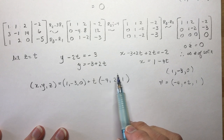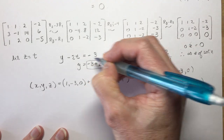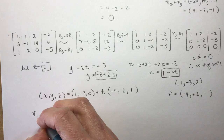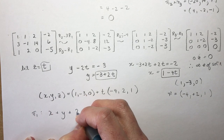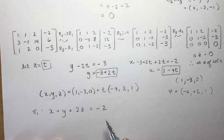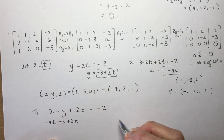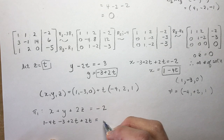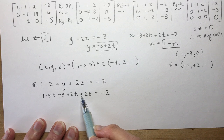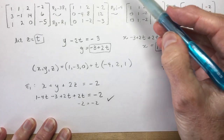To check, plug x = 1 − 4t, y = −3 + 2t, z = t back into the first plane equation x + y + 2z = −2. We get (1 − 4t) + (−3 + 2t) + 2t = 1 − 3 + (−4t + 2t + 2t) = −2 + 0t = −2. That checks out. You can do the same for the second and third planes.